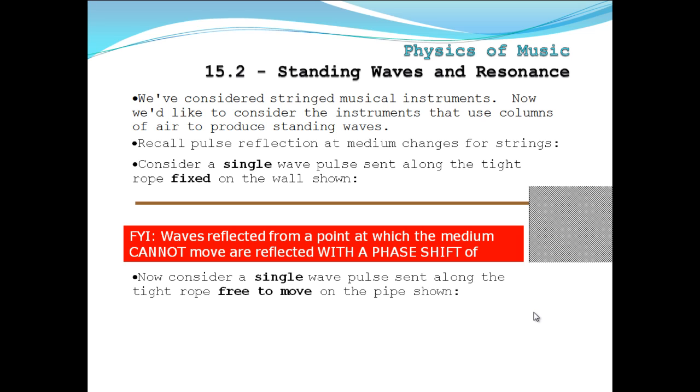Now consider a single wave pulse sent along type rope fixed free to move on the pipe as shown. So this one, the wave, this little end down here, can move up and down. And if you remember how change medium stuff works, fixed end, free end, it's going to come down and how's it going to come back? If you said the exact same way, you'd be correct. It's going to come down and it's going to come back. It's going to be identical, just moving in opposite directions.